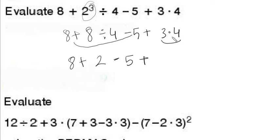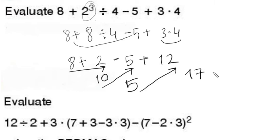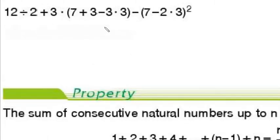We get 8 plus 2 minus 5 plus 12, because 3 times 4 equals 12 and multiplication takes priority. Now we have only addition and subtraction, so from left to right: 8 plus 2 is 10, 10 minus 5 is 5, and 5 plus 12 is 17. The answer is 17.